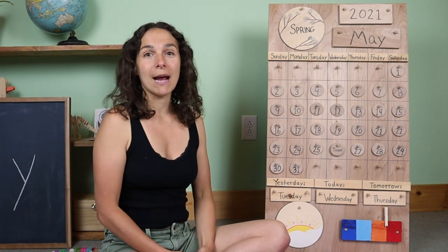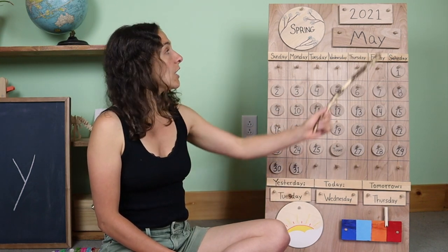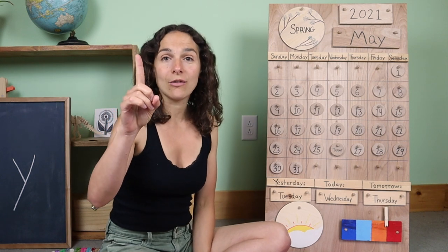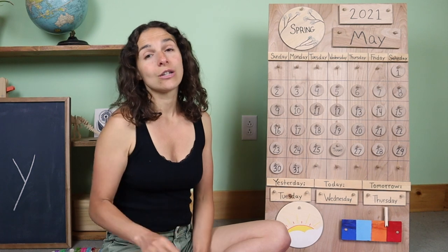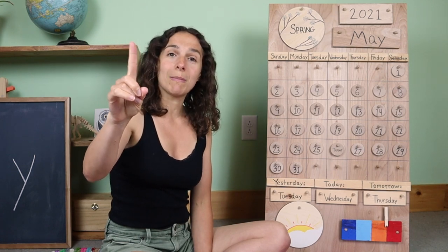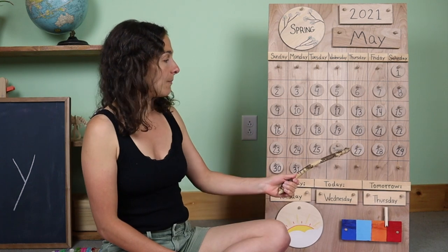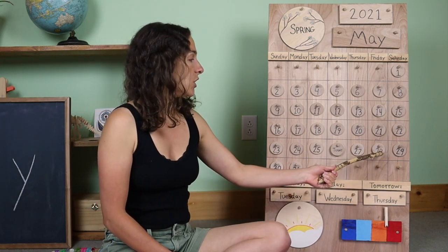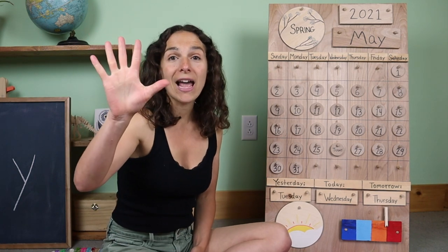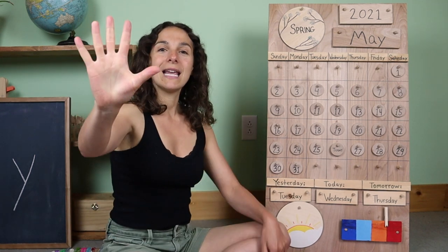Let's say the date one more time together. Are you ready? Today is May 26th, 2021. And now let's get our counting fingers ready. We are going to count the remaining days left in the month of May. The month of May is almost over, so we don't have very much counting to do. After today, we have one, two, three, four, five — we only have five more days left in the month of May, and then we will begin a brand new month.